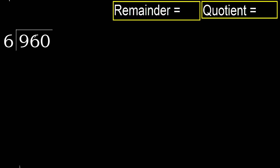960 divided by 6. 9 is not less, therefore start with 9. 6 multiplied by which number is nearest to 9, but not greater? 6 multiplied by 2 is 12, which is greater.